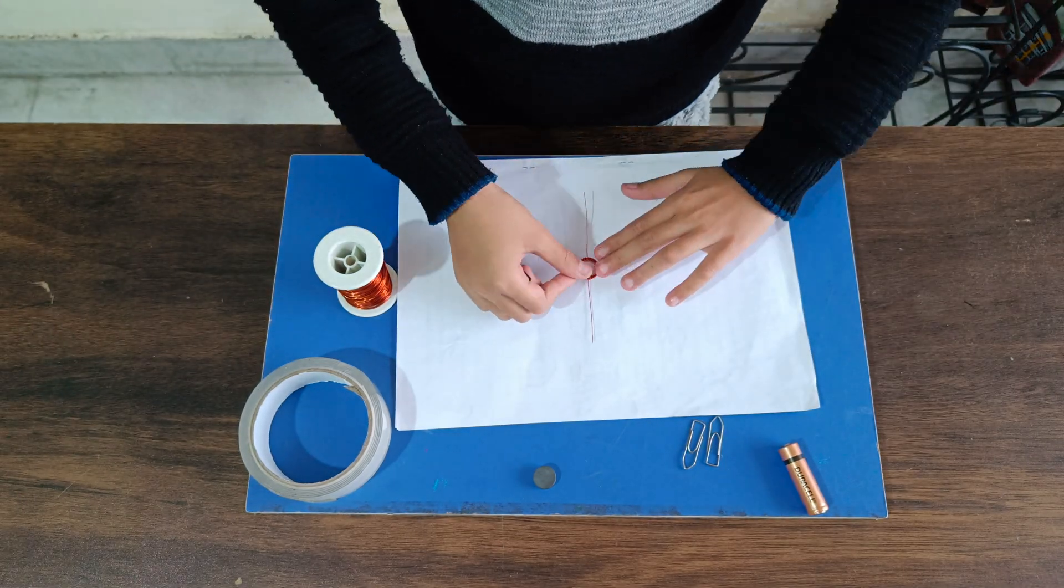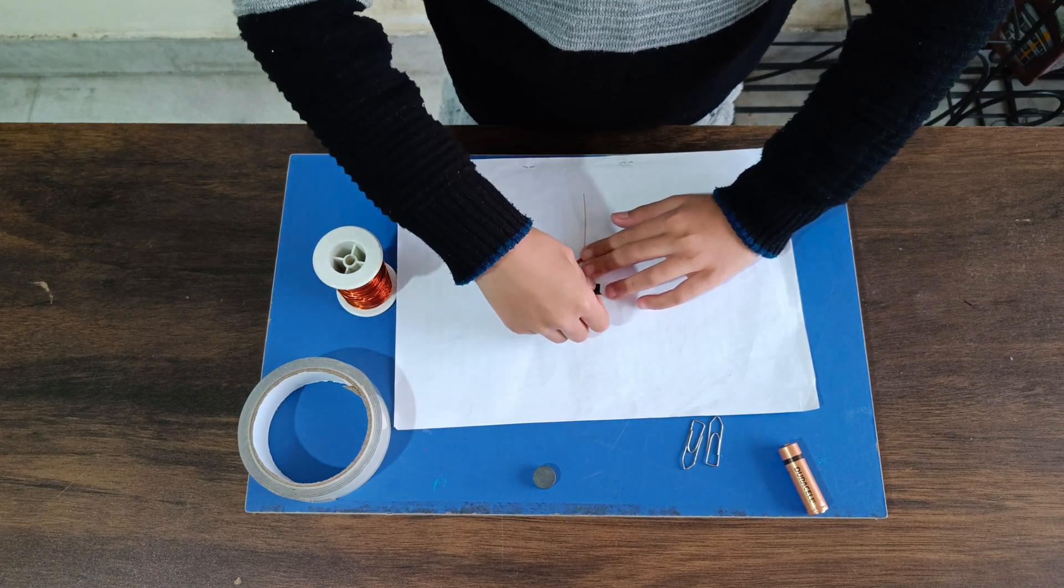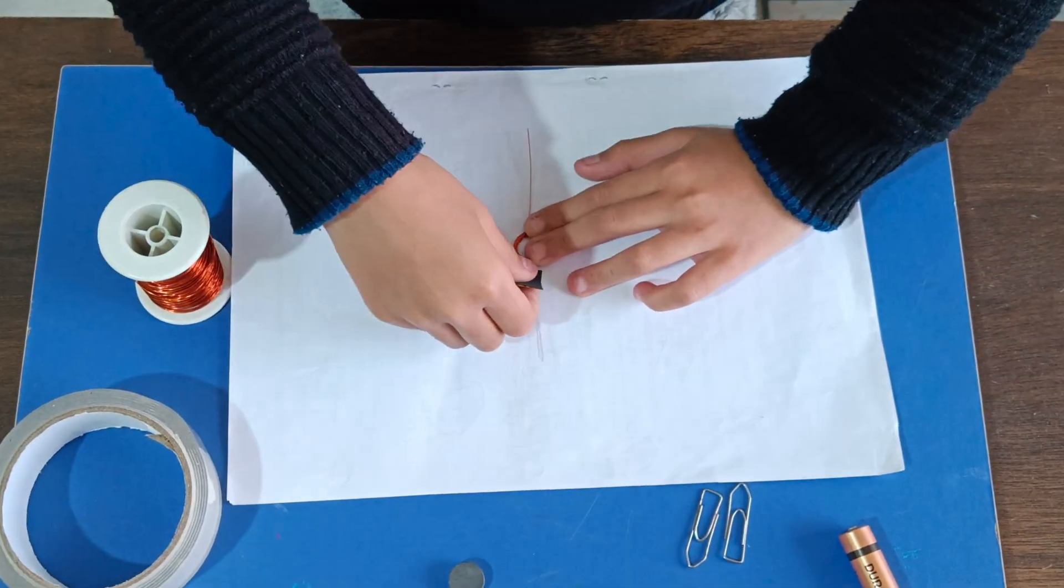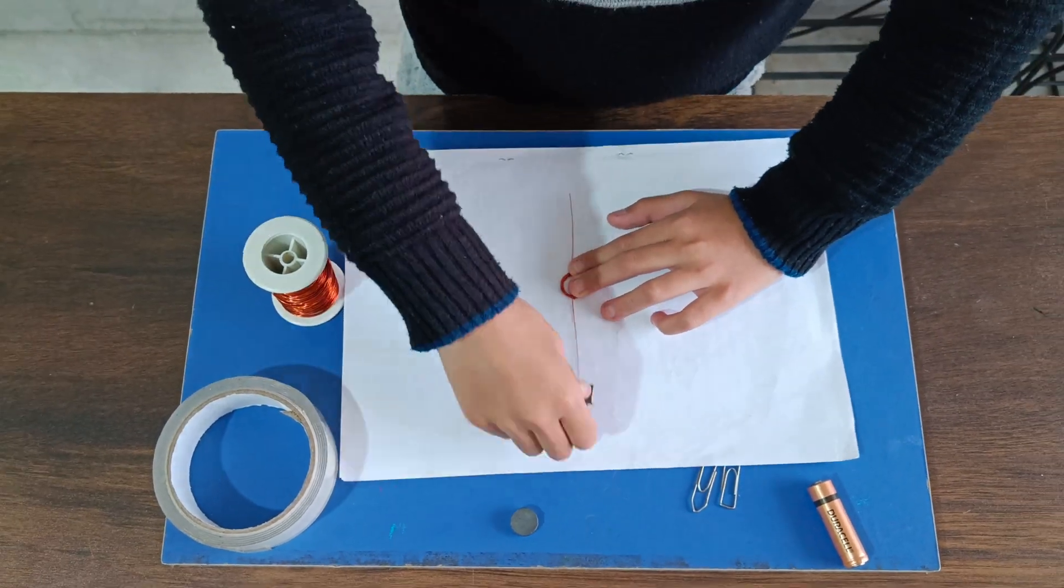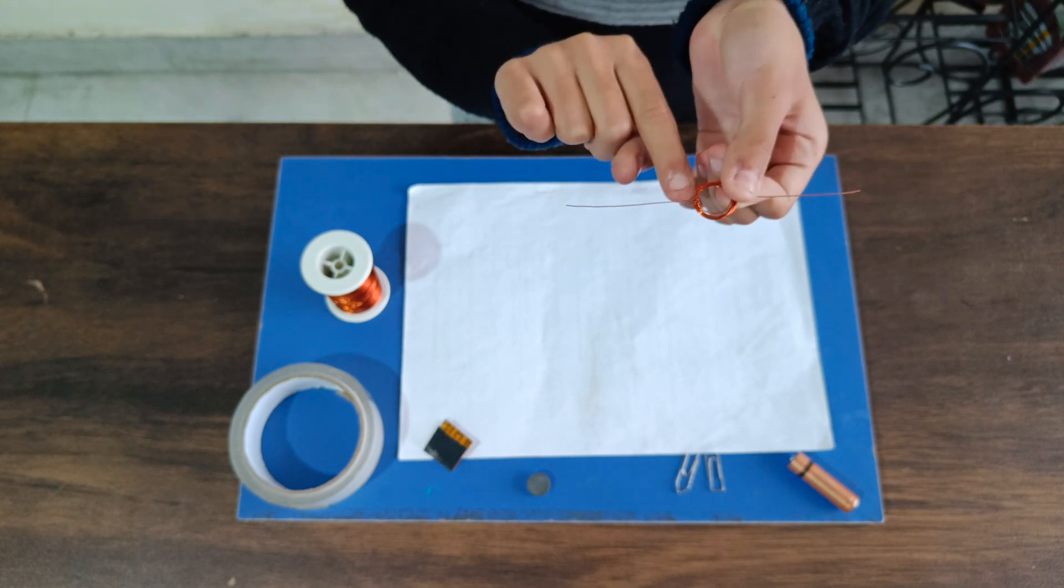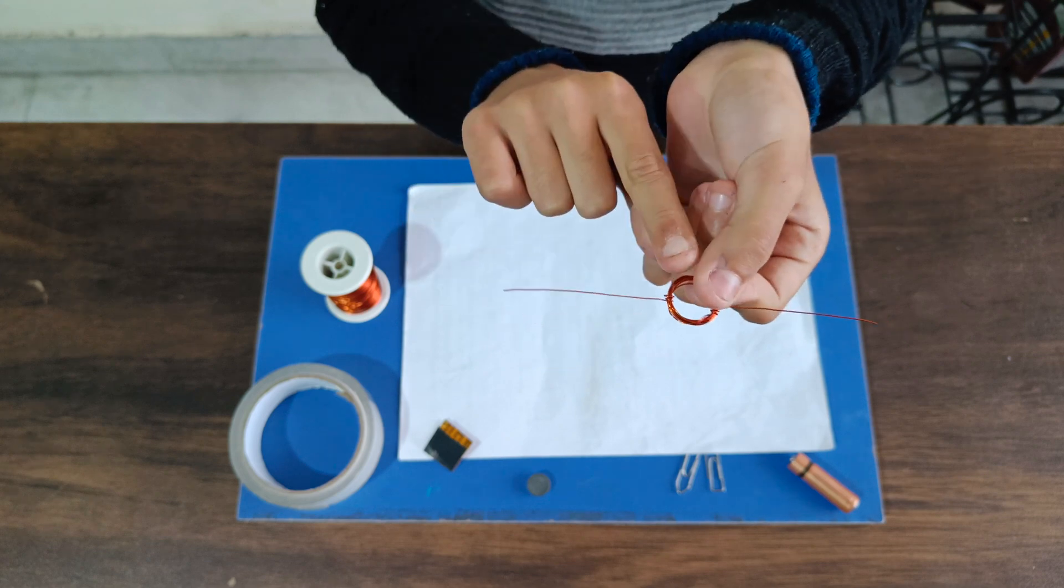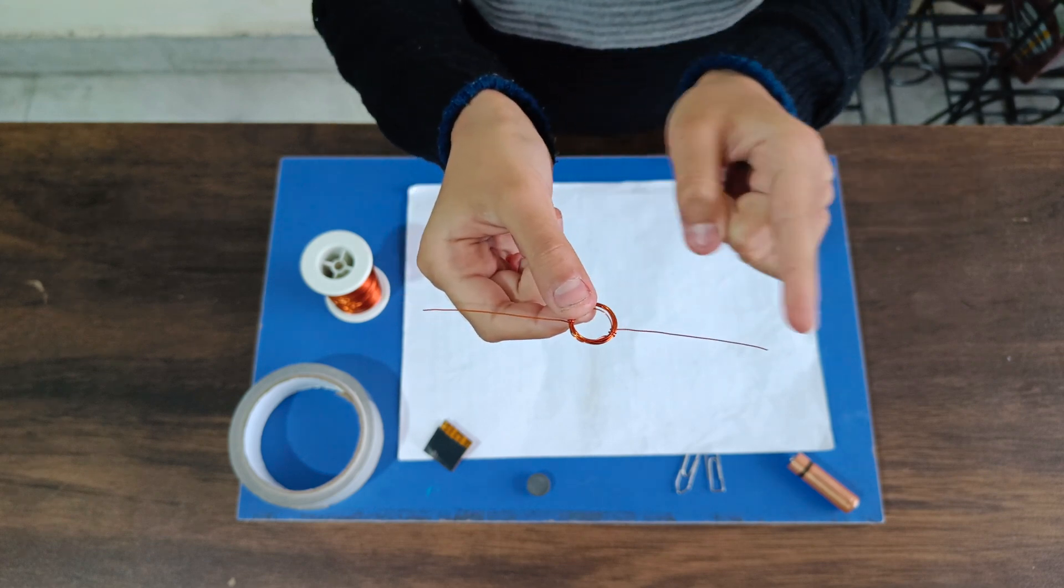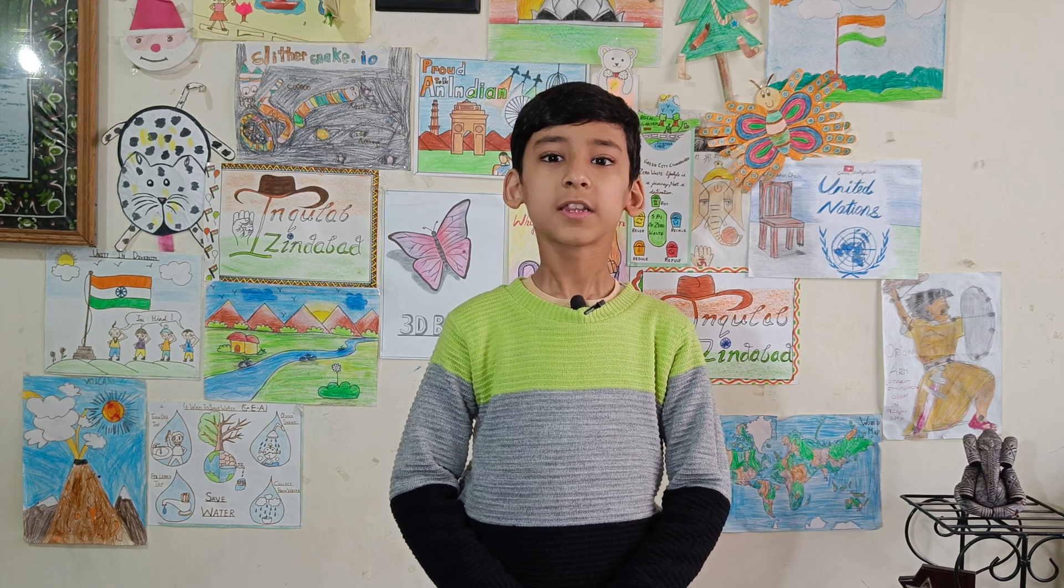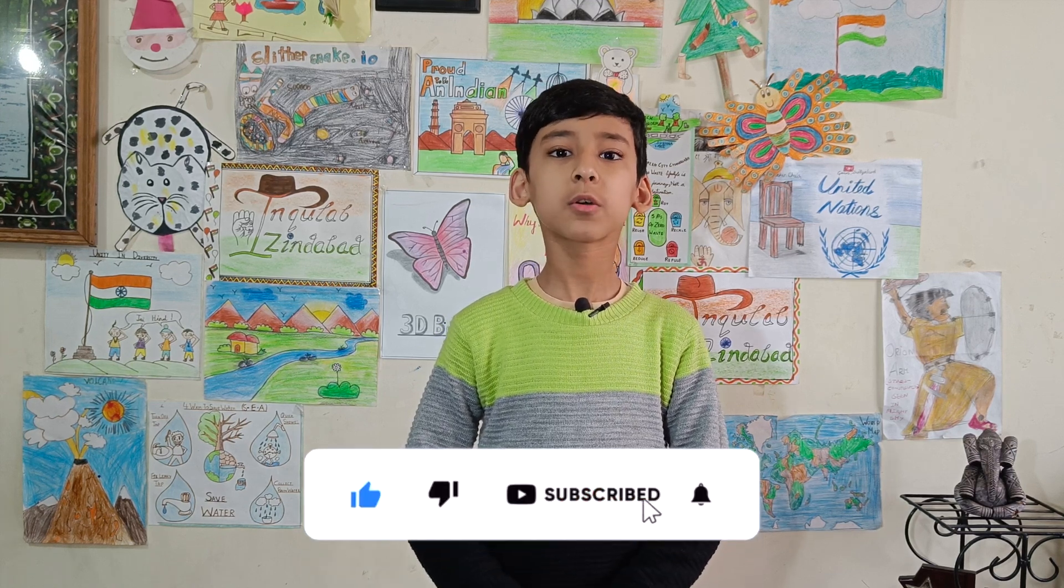Then we will do the same on the other loose end of the wire. So both loose ends of the coil have the same side face rubbed with sandpaper. The other face still remains as it is. This makes sure that only half of the time the current passes to the coil.